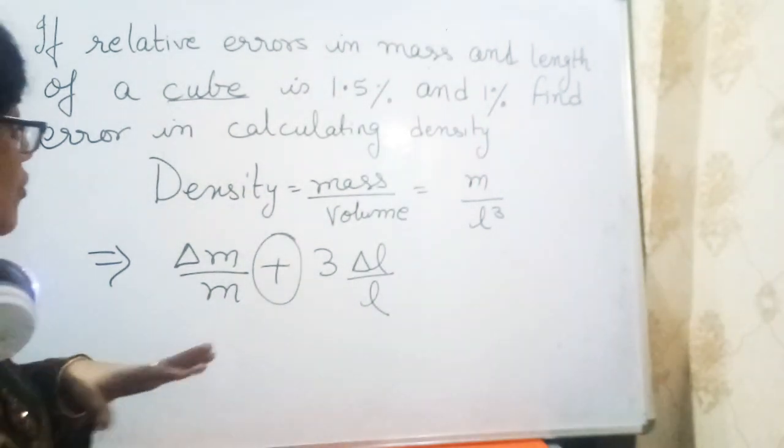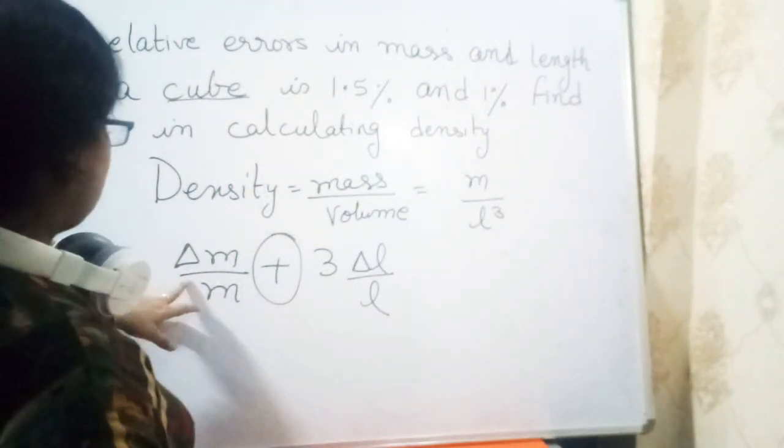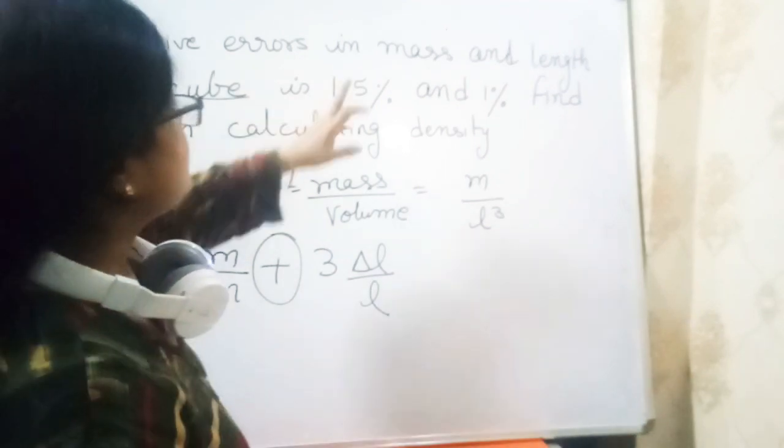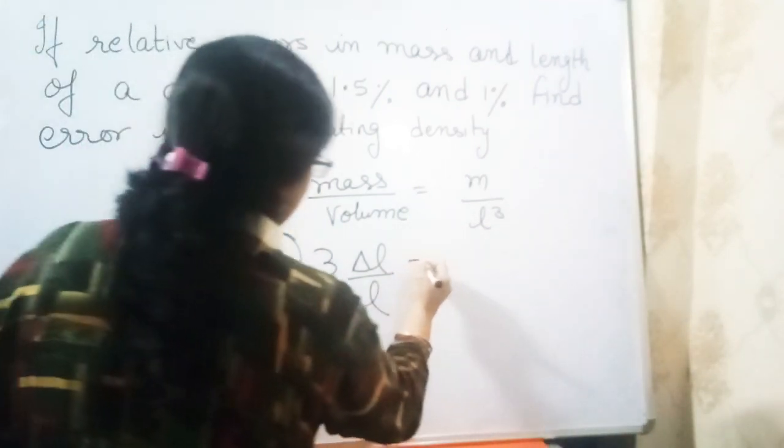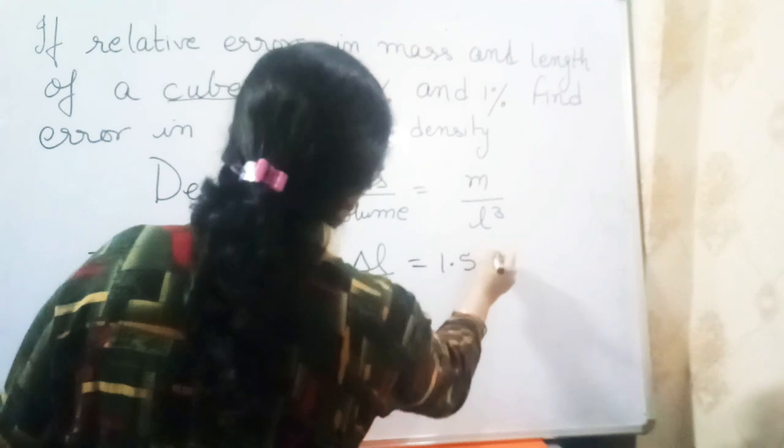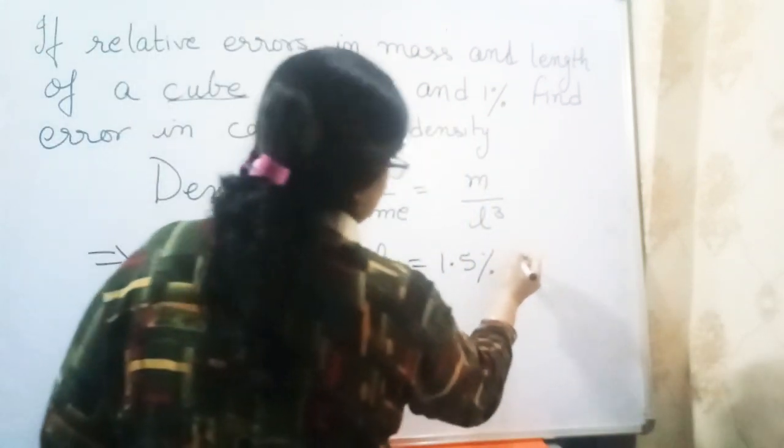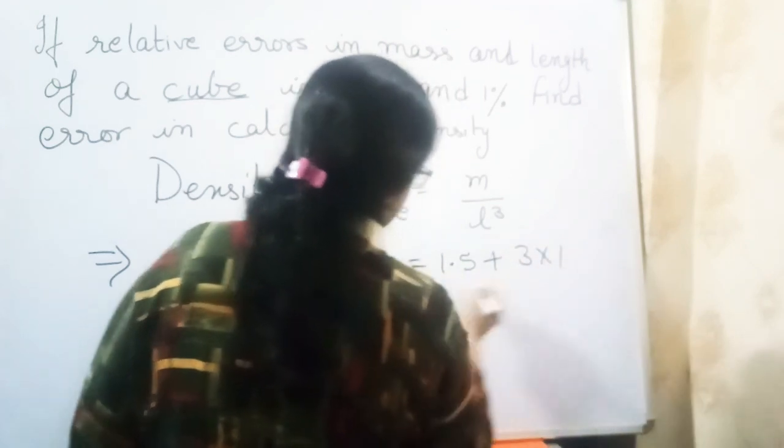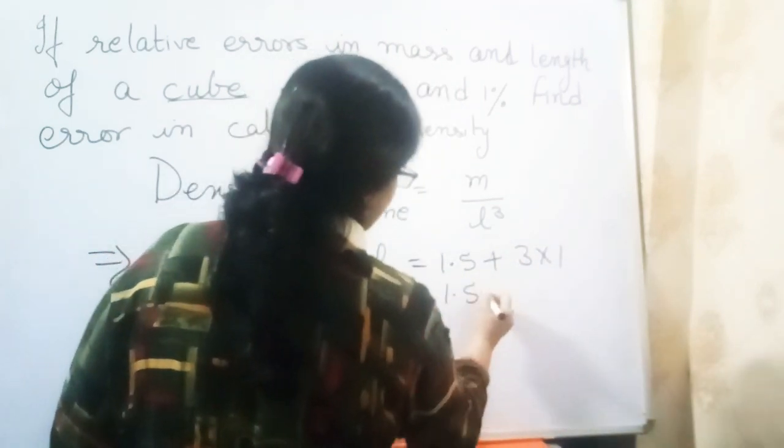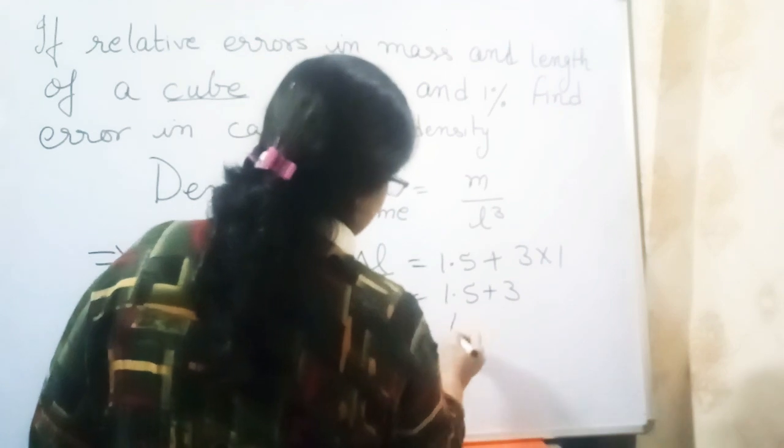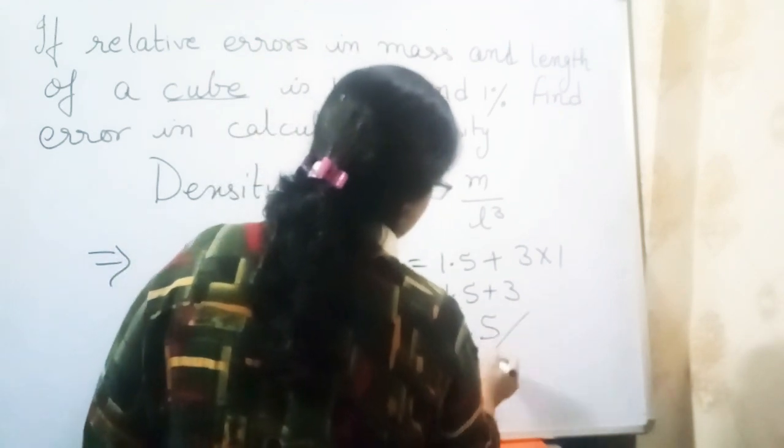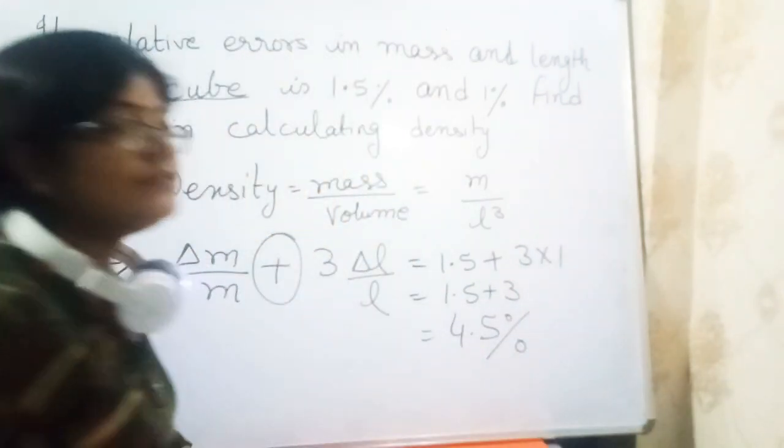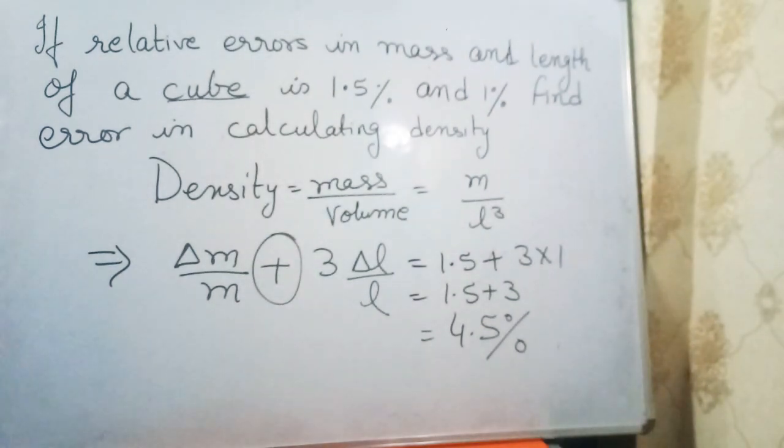Now delta m over m is 1.5%, and delta L over L is 1%, so 3 times 1. We have 1.5 plus 3, so my error is 4.5%. Now proceeding to the second question.